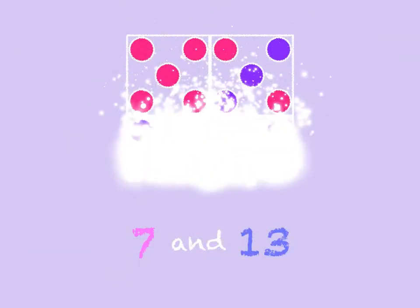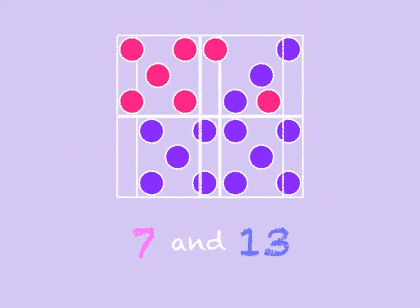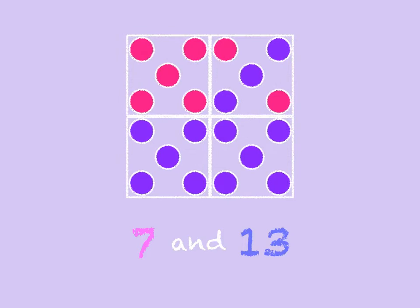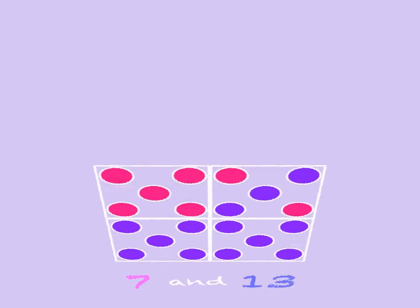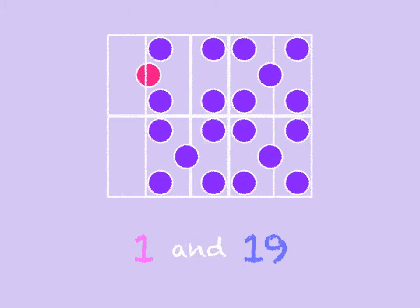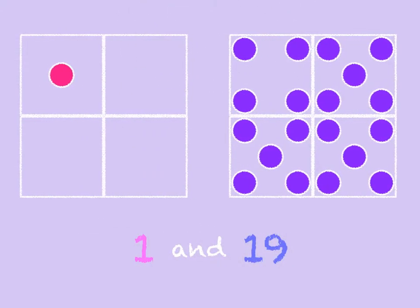Seven and thirteen. Seven and thirteen make twenty. One and nineteen. One and nineteen make twenty.